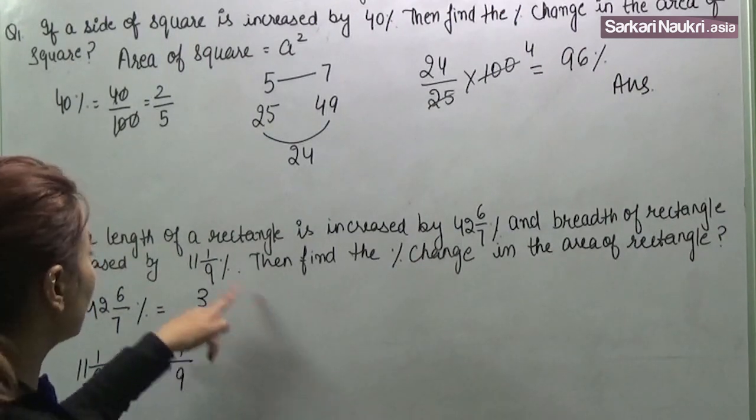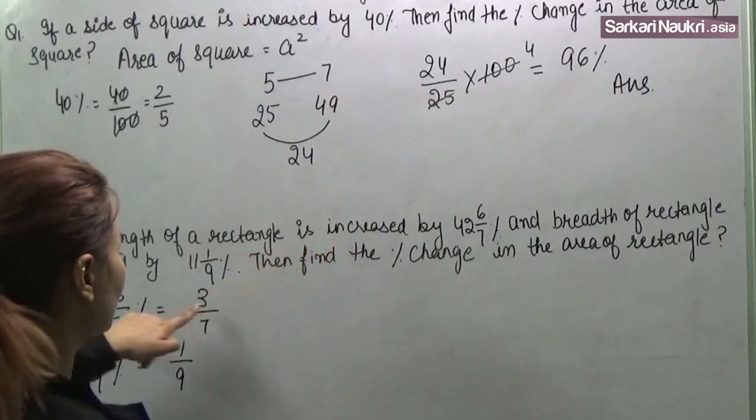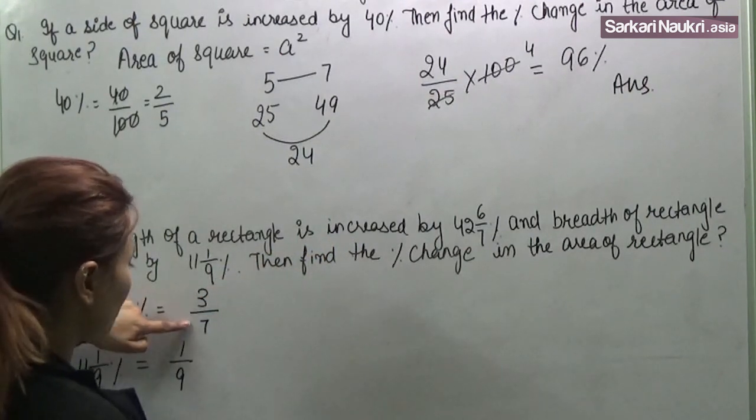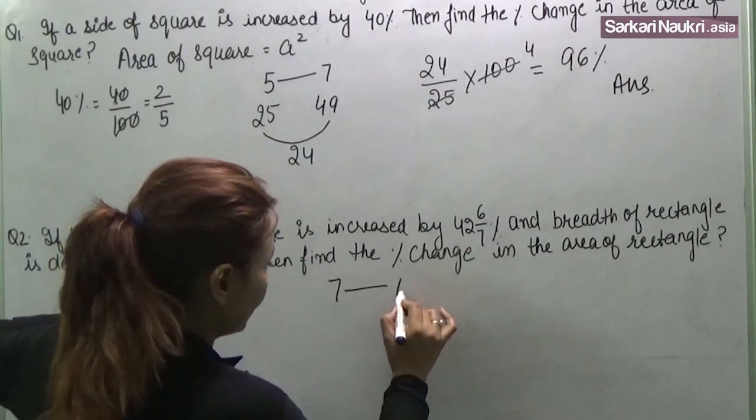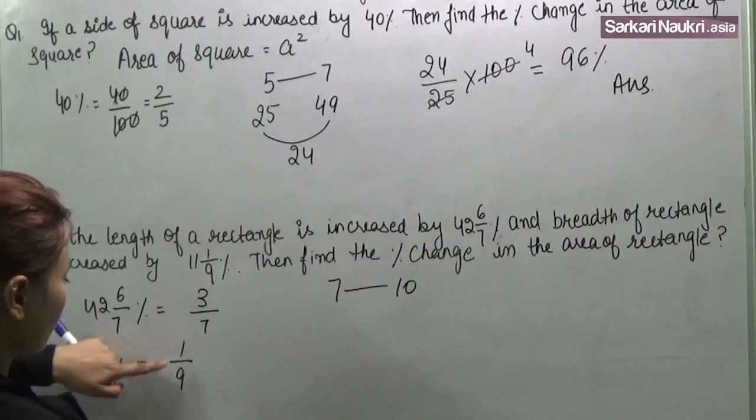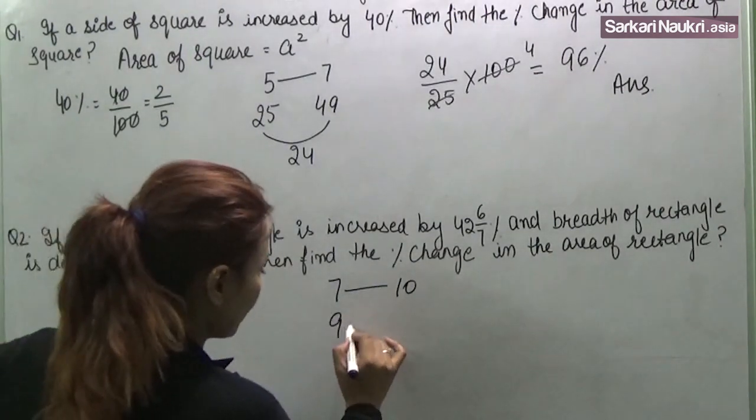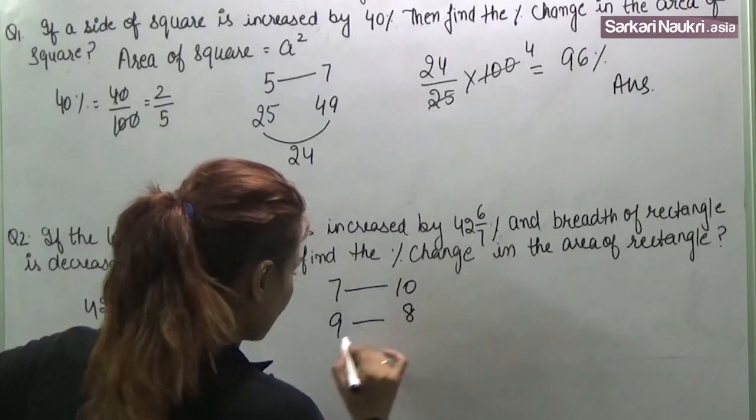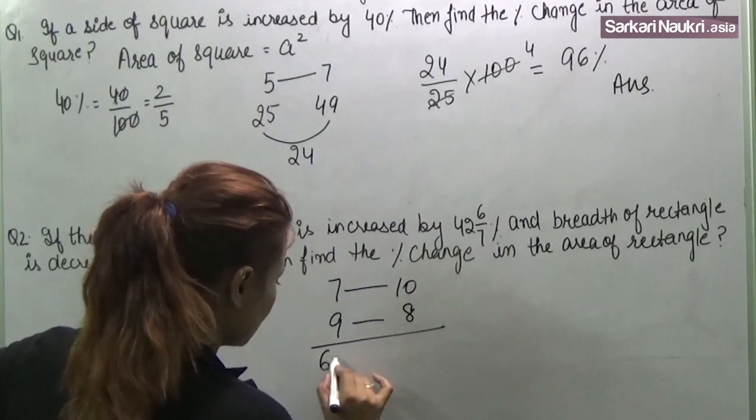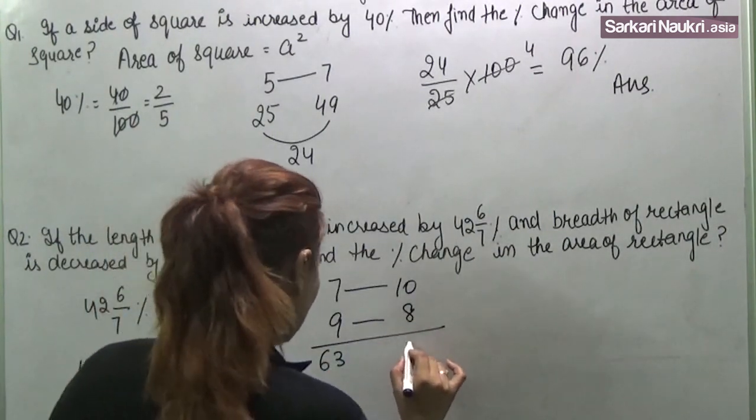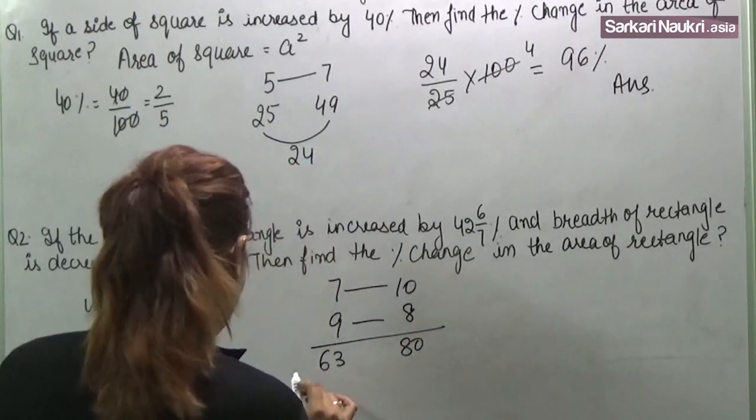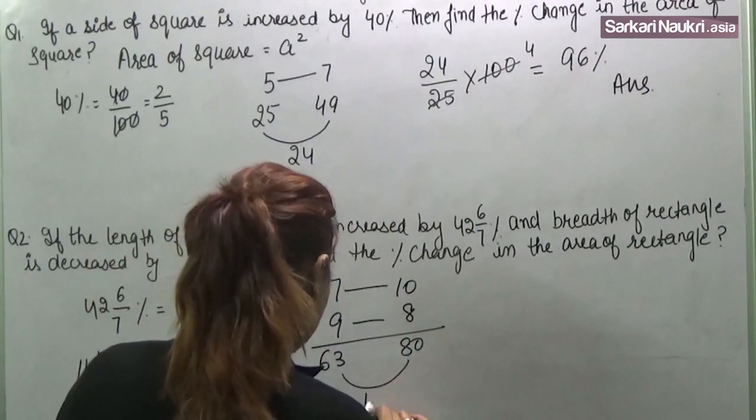Length of the rectangle is increased by, so it is increasing 3 over 7. This will be this. And it is decreasing 1 over 9. So this will be 63 and this will be 80. The difference is 17.